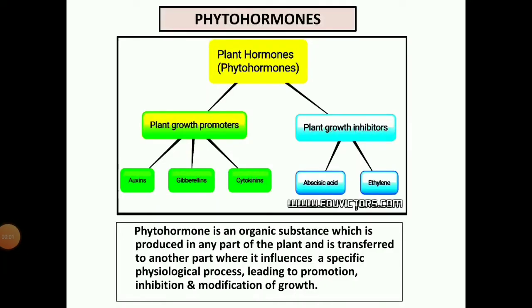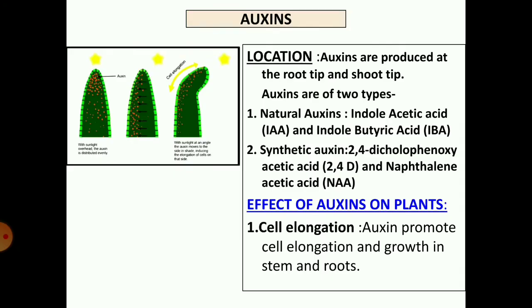Students, let us now study about phytohormones or plant hormones in detail. A phytohormone is an organic substance which is produced in any part of the plant and is transferred to another part where it influences a specific physiological process leading to promotion, inhibition, and modification of growth. Plant hormones can be broadly divided into two categories: plant growth promoters, which help in increasing or accelerating growth — they are auxins, gibberellins, and cytokinins — and plant growth inhibitors, which retard growth — they are abscisic acid and ethylene.